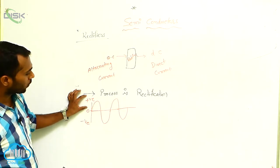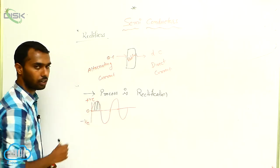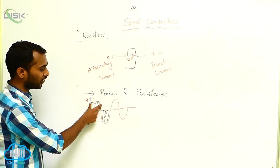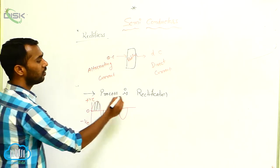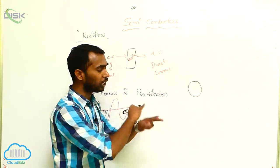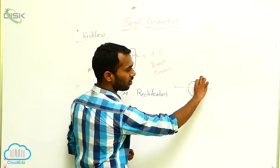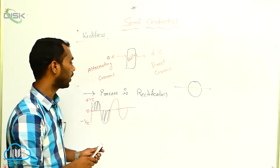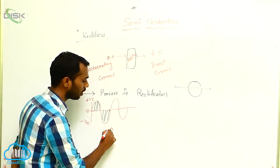The positive half cycle and the negative half cycle — this part is called a half cycle. This part is on the positive side, that is why it is called the positive half cycle; and on the negative side, the negative half cycle. This total part is called a cycle — you cut it into two pieces. One is the positive side, the positive half cycle; the other is the negative side, the negative half cycle. This is AC current.